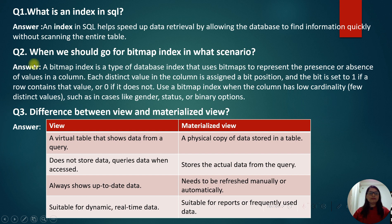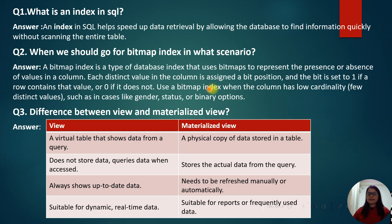The next question is: when should we use a bitmap index? A bitmap index is a type of database index that uses a bitmap to represent the presence or absence of a value in a column. Each distinct value in the column is assigned a bit position, set to 1 if the row contains that value or 0 if it does not. Use a bitmap index when the column has low cardinality, meaning few distinct values, such as gender, status, or binary options.